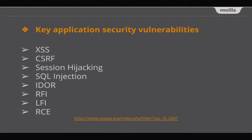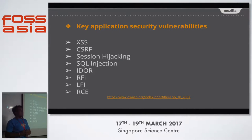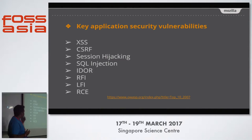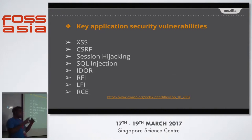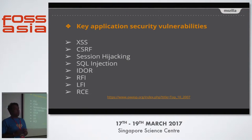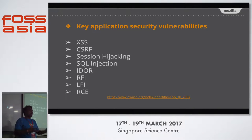Now let me talk about key web application security vulnerabilities. There are common ones: XSS (cross-site scripting), CSRF (cross-site request forgery), session hijacking, SQL injection, IDOR, RFI, LFI, and RCE. Every one of these vulnerabilities is very critical and your data can be stolen by any of them. You can go to OWASP to learn more about how these can be done and how to protect yourself.